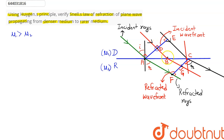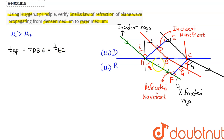Since all points on a wavefront lie in the same phase, the time taken to travel from A to F is equal to the time taken to travel from D to B to G, which is also equal to the time taken to travel from E to C. Taking the first and last equation, the time from A to F equals the time from E to C, so t_AF equals t_EC.